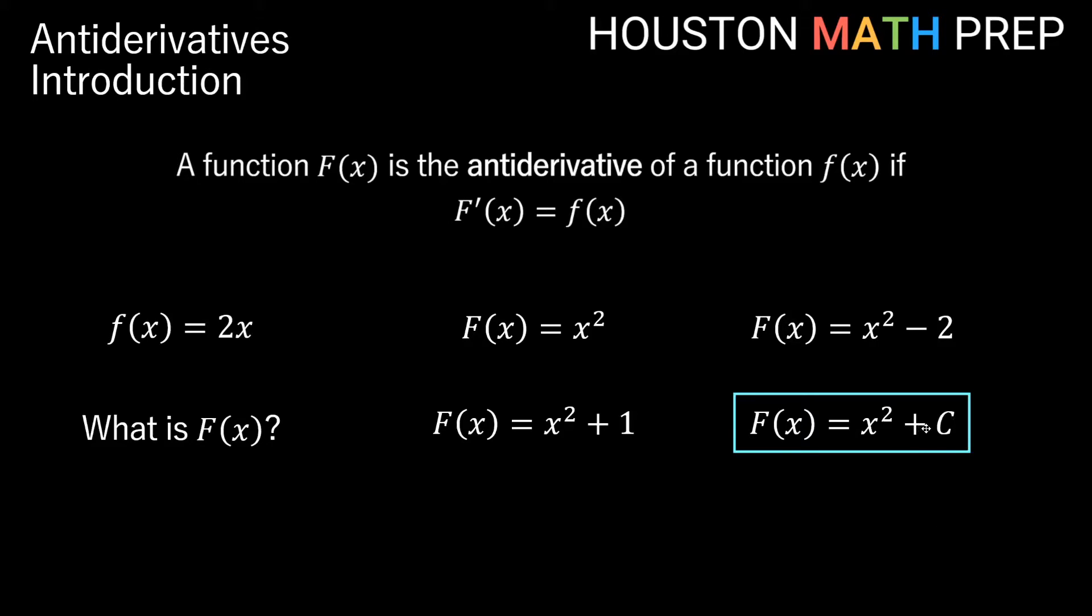We call this plus c the constant of integration. We would tack that on to any general anti-derivative. The idea is this constant is arbitrary. It could be a positive number, it could be a negative number, it could be 0, but any function with this format will have a derivative of 2x, and so all of these functions are considered the anti-derivative.